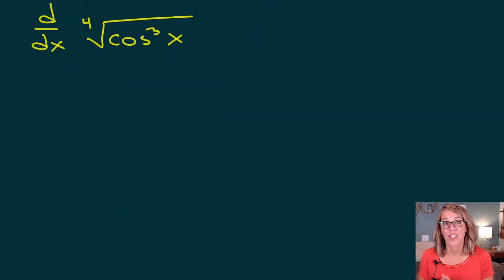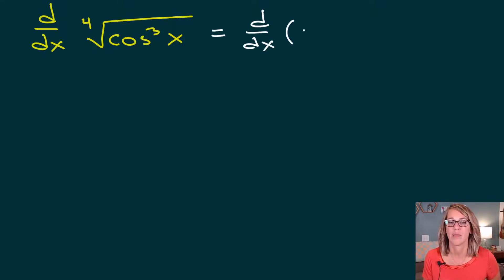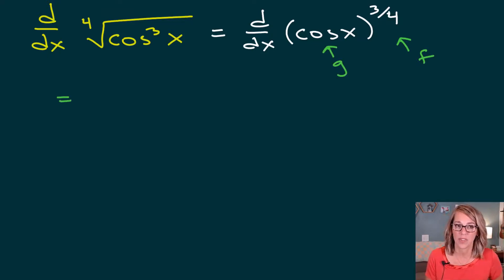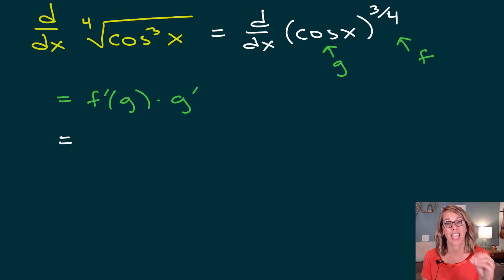In this one, I've got d/dx of the fourth root of cosine cubed of x. I really want to use a power rule here, so I'm going to rewrite this one. I've got a power of 3 inside and a fourth root, so I can rewrite this using a rational or fractional exponent: d/dx of cosine x to the power 3 over 4. So I again have a chain rule — I've got my outer function f and my inner function g.